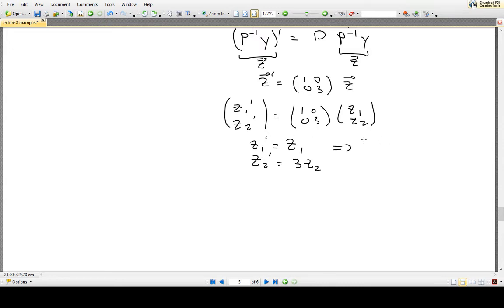And these are independent ordinary differential equations of first order that are actually very easy to solve. We can actually just inspect this and realize that Z1 is equal to some constant, say C1 times e to the t, and Z2 is equal to some other constant C2 times e to the 3t.